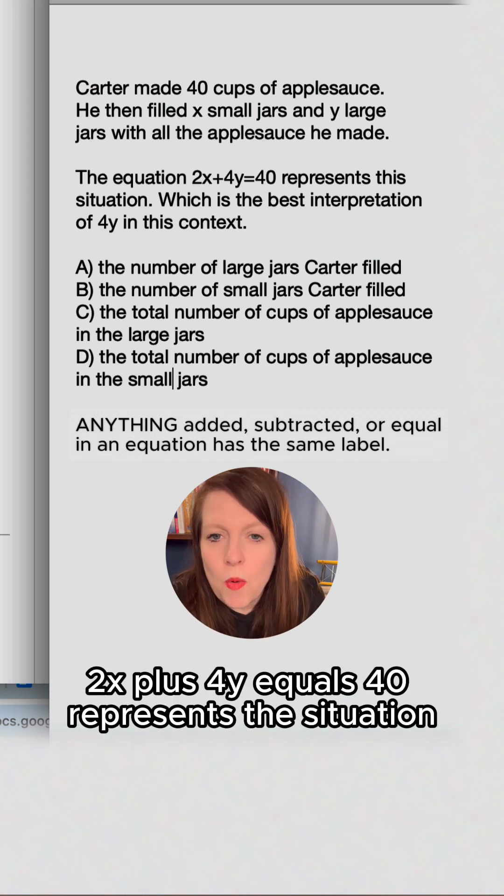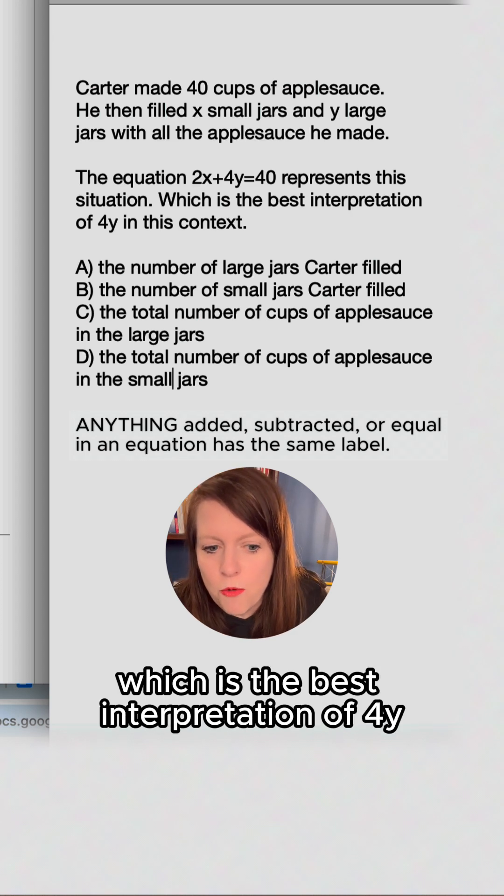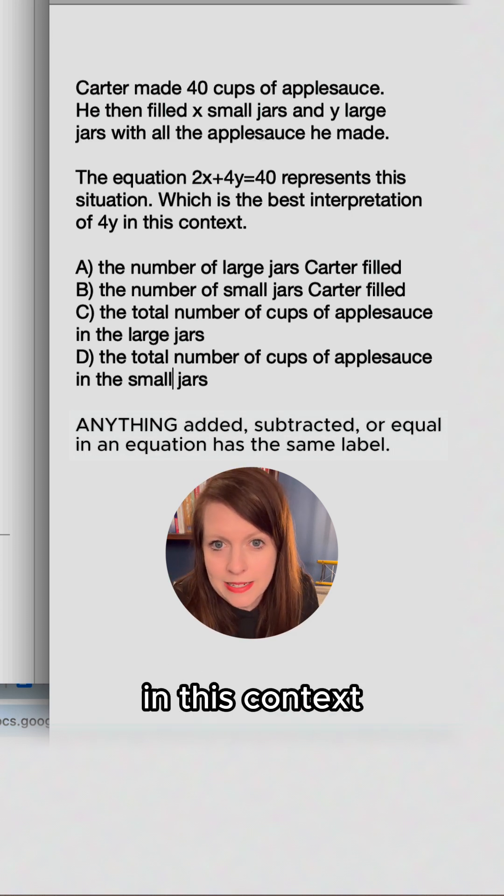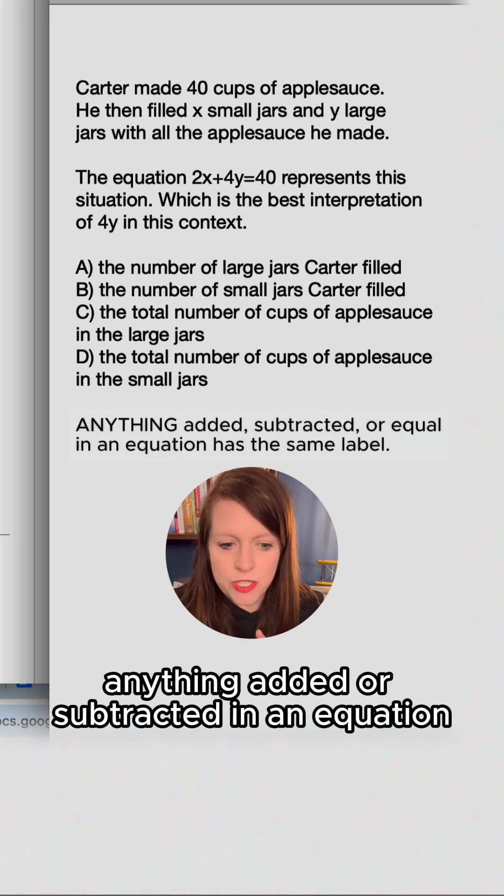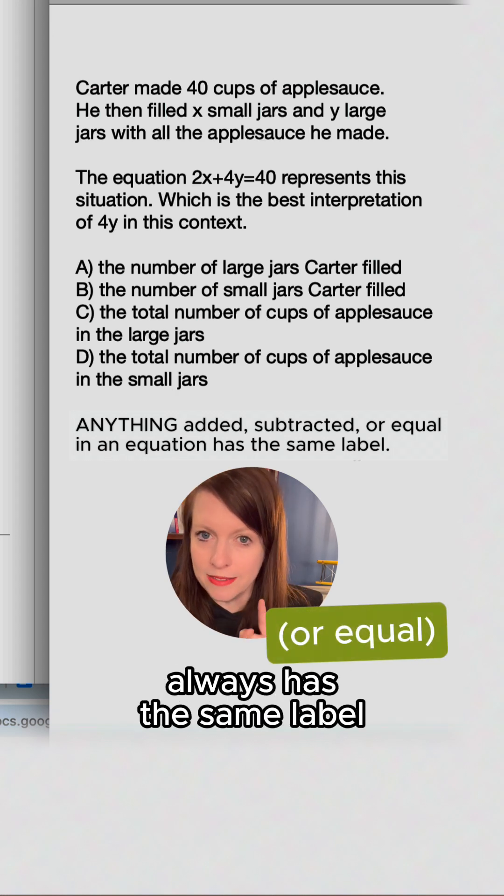The equation 2x plus 4y equals 40 represents this situation, which is the best interpretation of 4y in this context. So here's the secret trick: anything added or subtracted in an equation always has the same label.